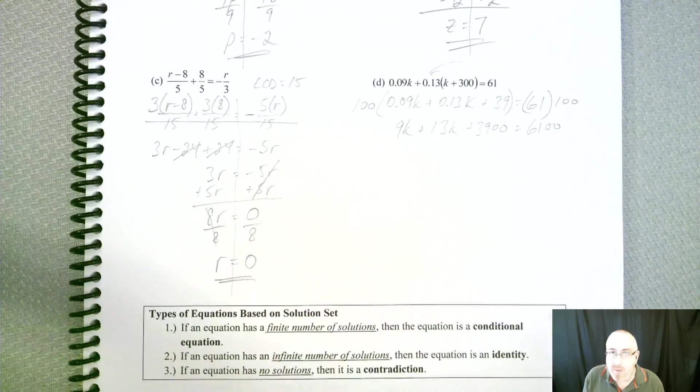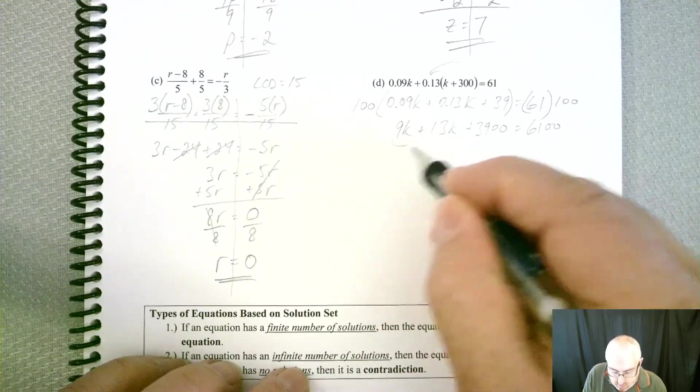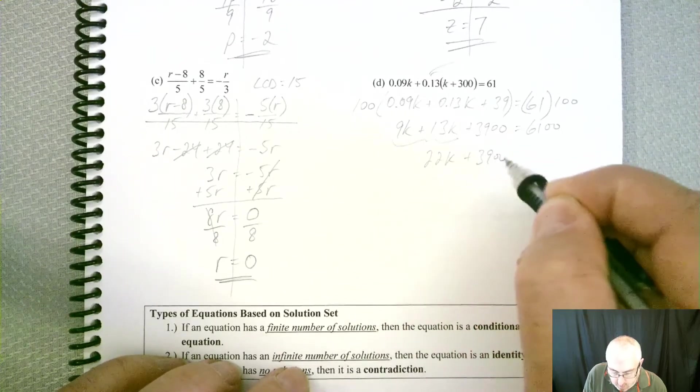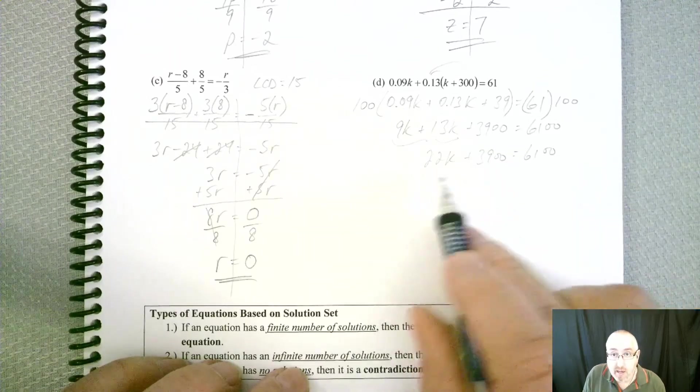Now we don't have to worry about those decimal points anymore. So we can combine, so we have 22k, and now we can start to get rid of these two numbers.